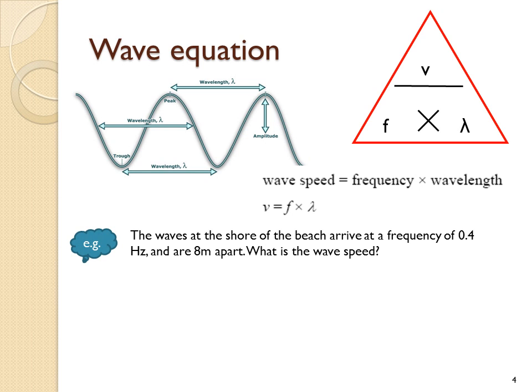For example, if the waves at the shore of a beach arrive at a frequency of 0.4 hertz and are 8 meters apart, calculate the wave's speed. Wave speed would be the frequency times by the wavelength, which gives 3.2 meters per second. Note that the units here are standard, so the output units are also standard units for speed.